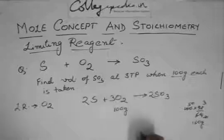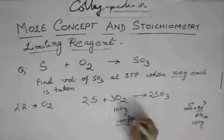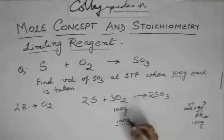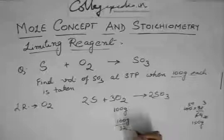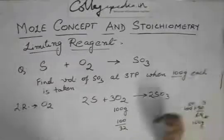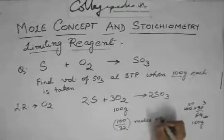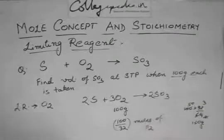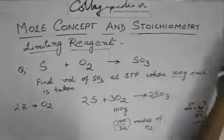How many moles of oxygen does this make? 100 gram divided by the weight, 32. So 100 by 32 moles of oxygen.